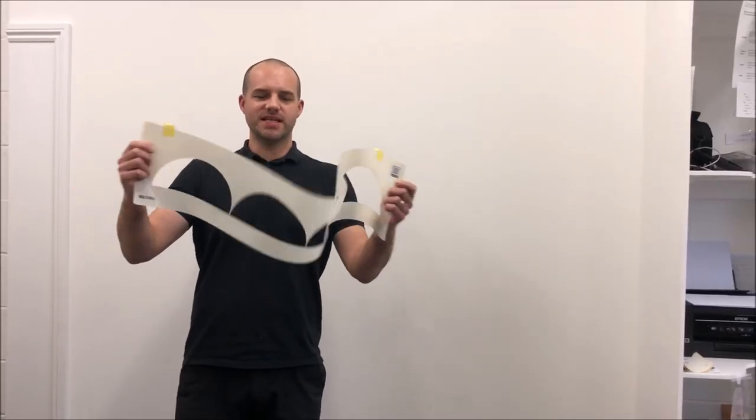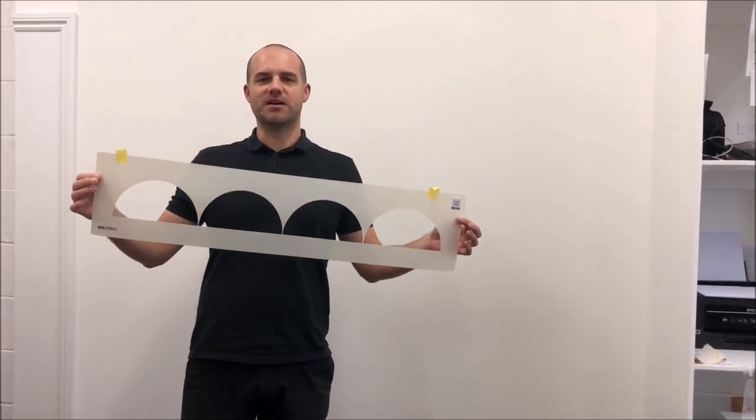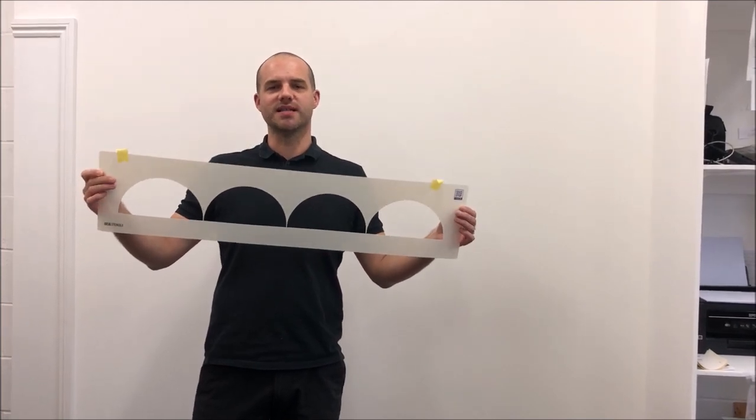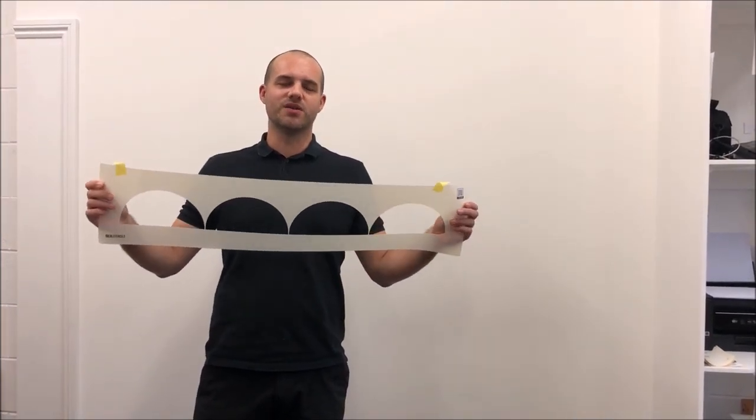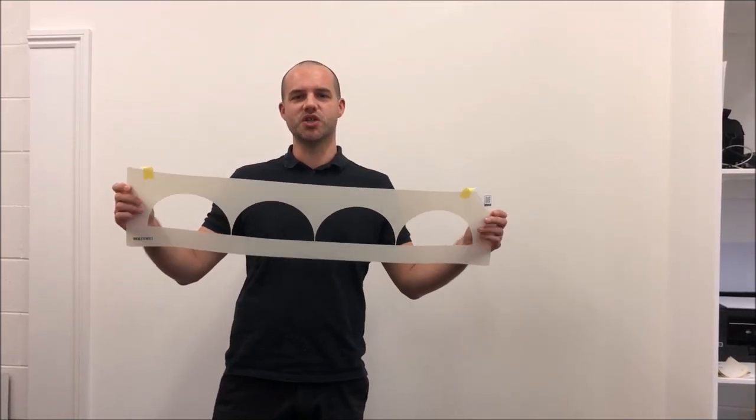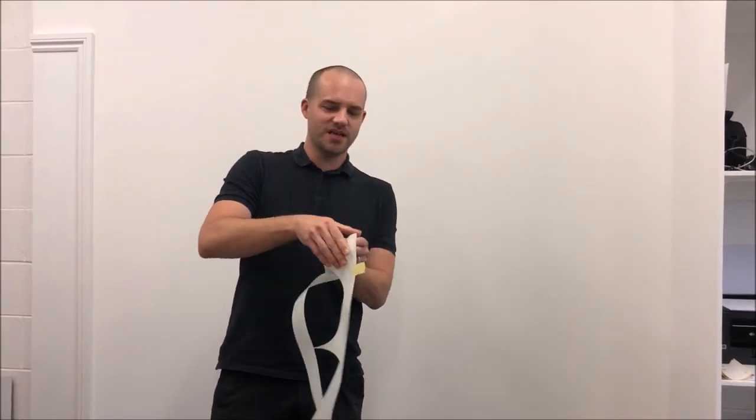This is the stencil—you can see it's quite thin and flexible. The material is called Mylar, which is the industry standard for home decor wall stencils. It's thin so when you affix it to the wall, you get nice close contact with the surface. Because it's flexible, it can bend around corners.